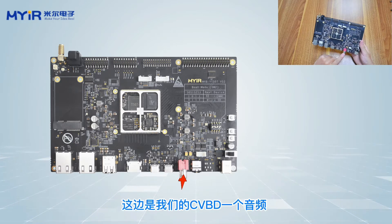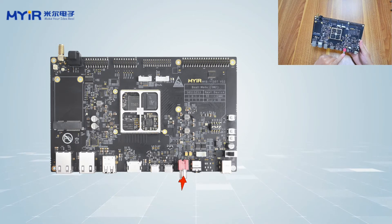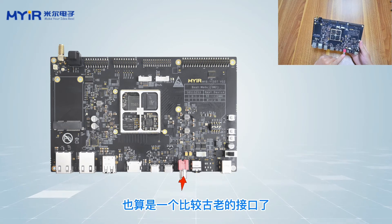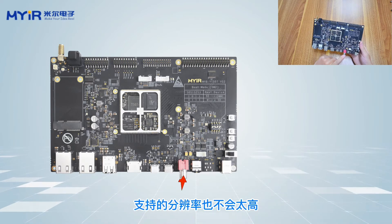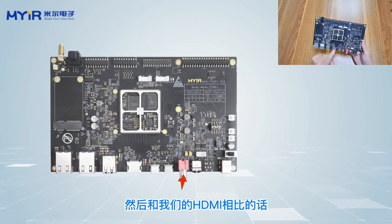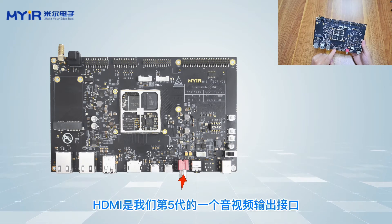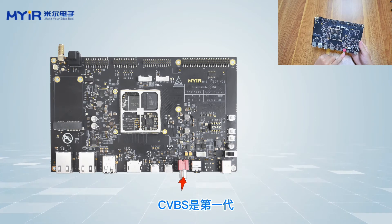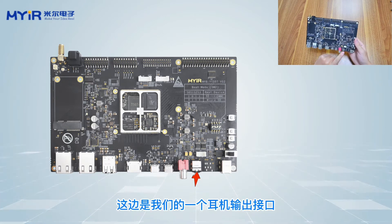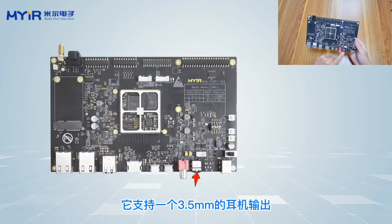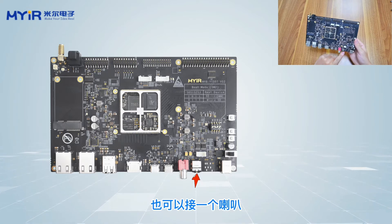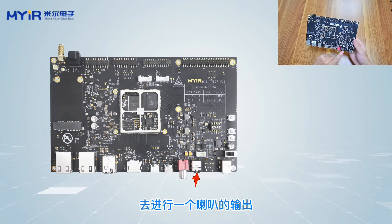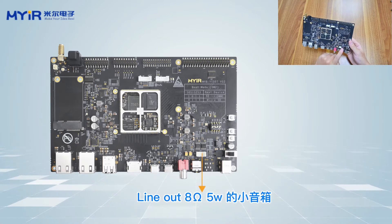This is the CVBS audio interface, which can often be seen on old-fashioned TVs — it is also an older interface. The supported resolution is not too high. Compared with HDMI, which is the 5th generation audio and video output interface, CVBS is the 1st generation. Here is a headphone output interface supporting 3.5mm headphone output. You can also connect a speaker with a 5V power supply to output audio through a small speaker.